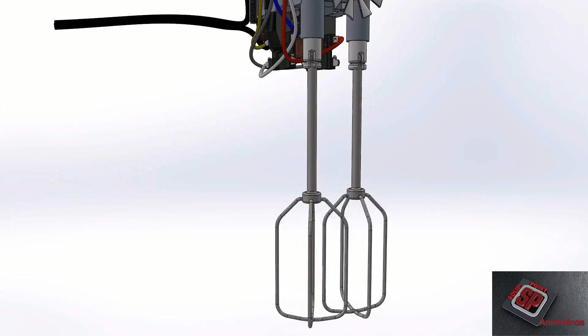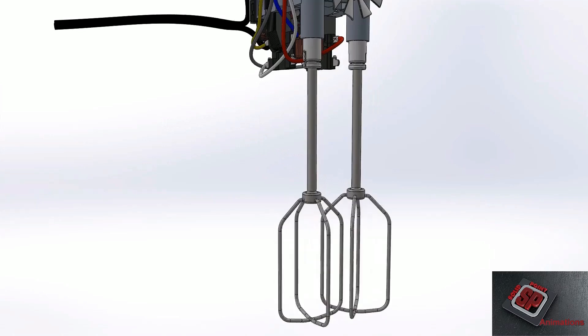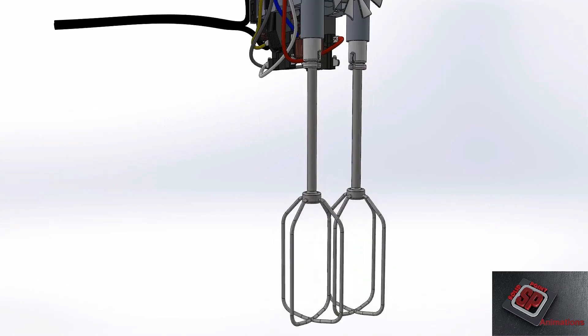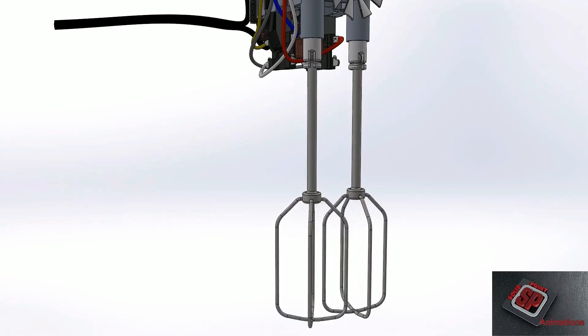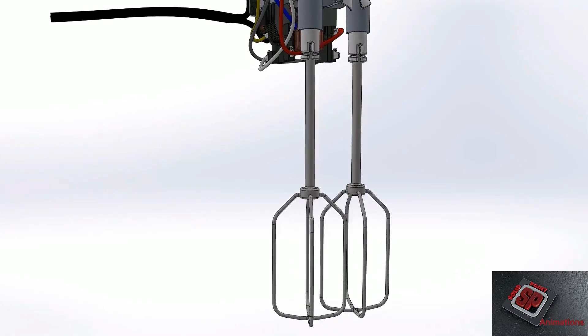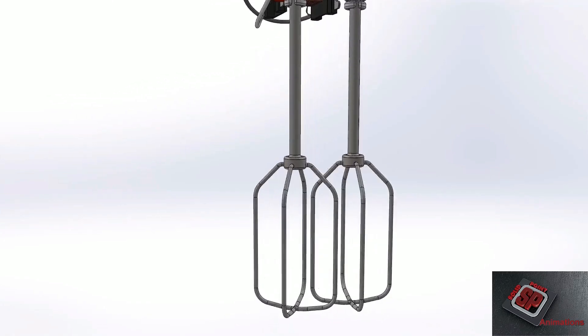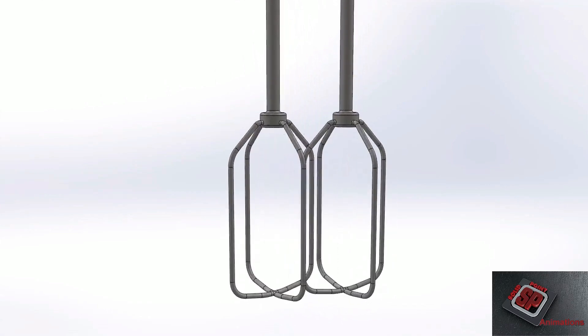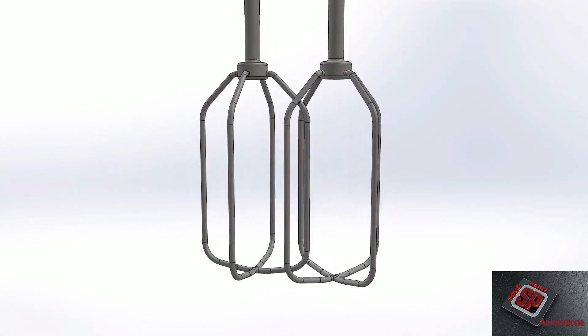The beaters are where the rubber meets the road for the hand mixer. They mix, beat, or whip ingredients by spinning in opposite directions to each other - one clockwise, the other counterclockwise. Some people wonder how the beaters do not bang into each other as they spin so fast in opposite directions, even though they are intermeshed together.